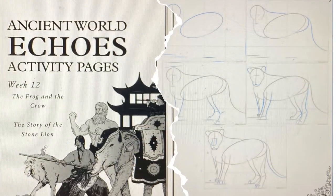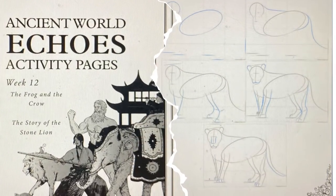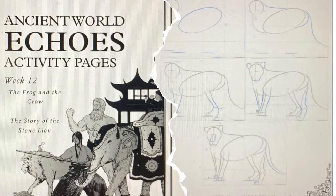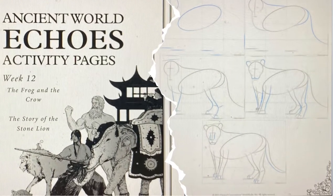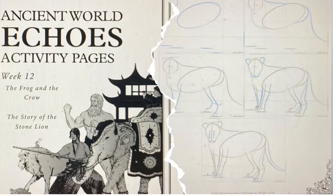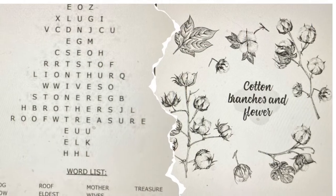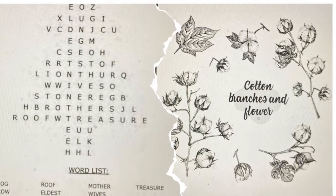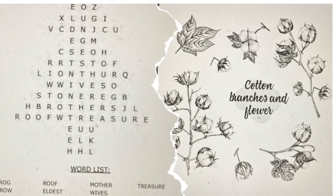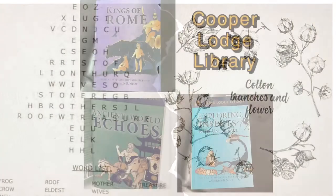Another fun resource inside the sandbox is the Ancient World's activity pages. The activities correspond with the story that you read. There's puzzles, coloring pages, drawing activities, and tangrams.